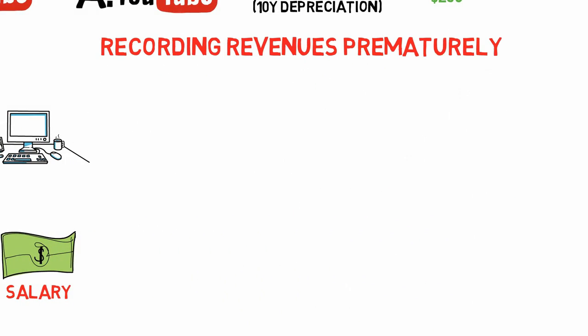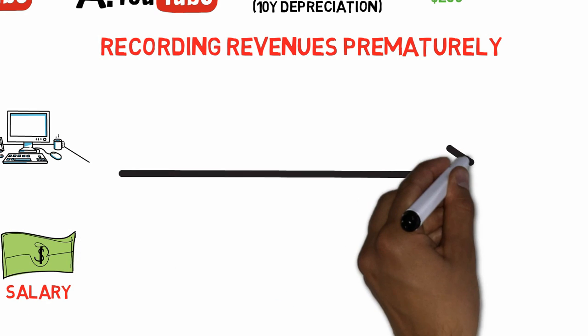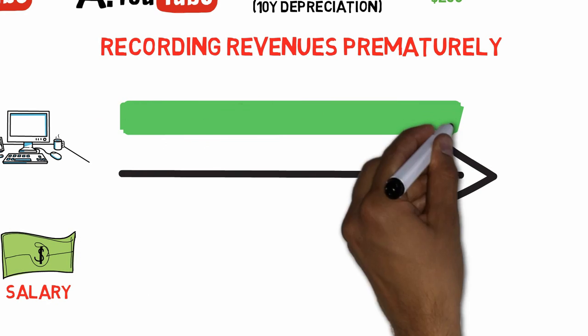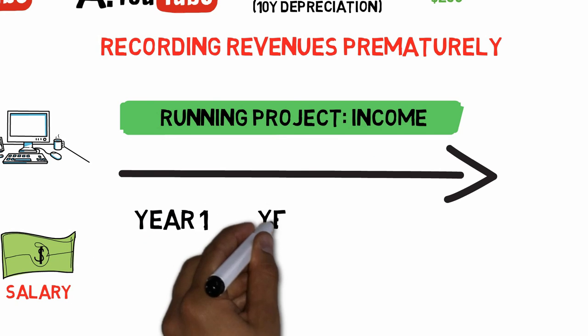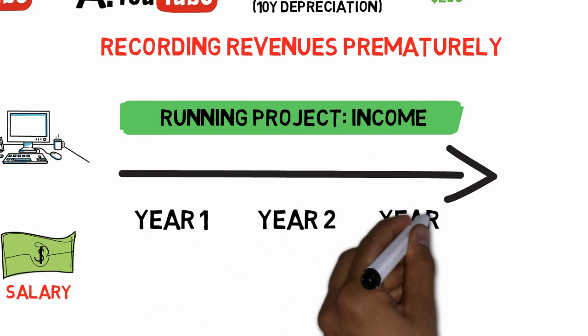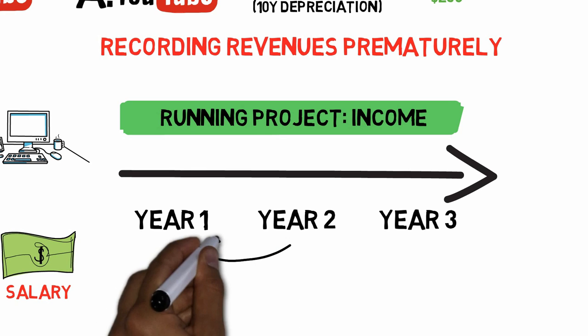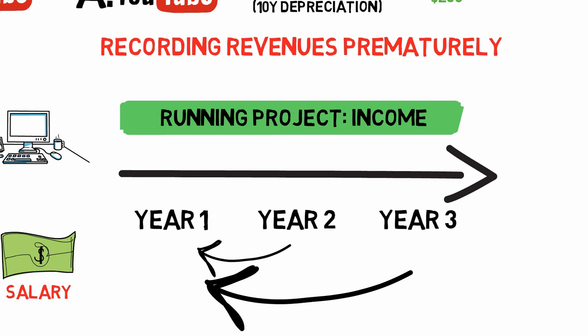The fifth method: recording revenues prematurely. Even though all services in a contract haven't been fulfilled yet, all earnings may be recorded in the current period. Let's say the YouTuber has a partnership with another channel where he's supposed to create a new series and is paid when the full series is done. At the end of the first year, he might have completed half the series, but decides to record the full contractual revenue in the current year anyway.